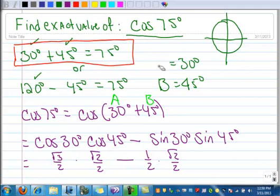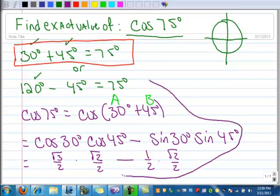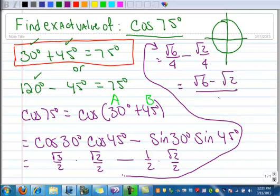Let me continue up here. When we multiply, square root of 3 times square root of 2 is square root of 6 over 4, minus square root of 2 over 4. I can rewrite this as one fraction: square root of 6 minus square root of 2, all over 4. That value is the exact value of cosine of 75 degrees.